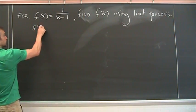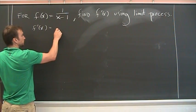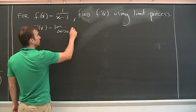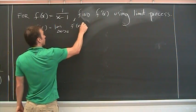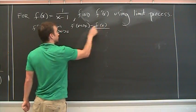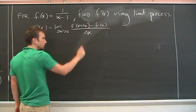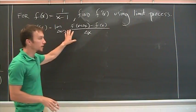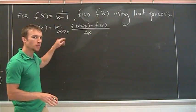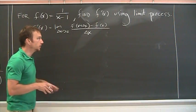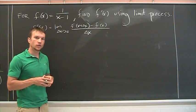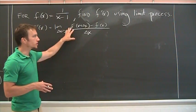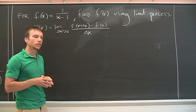That is, the derivative f prime of x is the limit as delta x goes to 0 of f of x plus delta x minus f of x over delta x. That's our definition of derivative. I'm not going to go into the explanation of where this comes from. Hopefully you've already seen that and understand it. We're going to use this to find the derivative. You'll have a much easier way to do this later, but for now we're going to use this limit process.